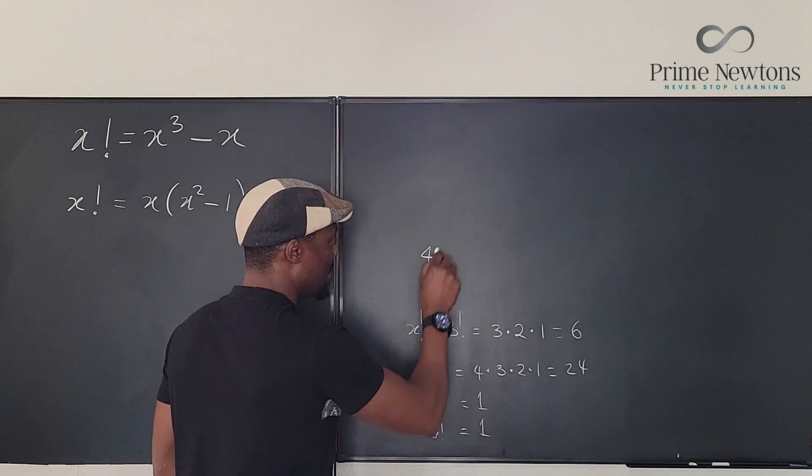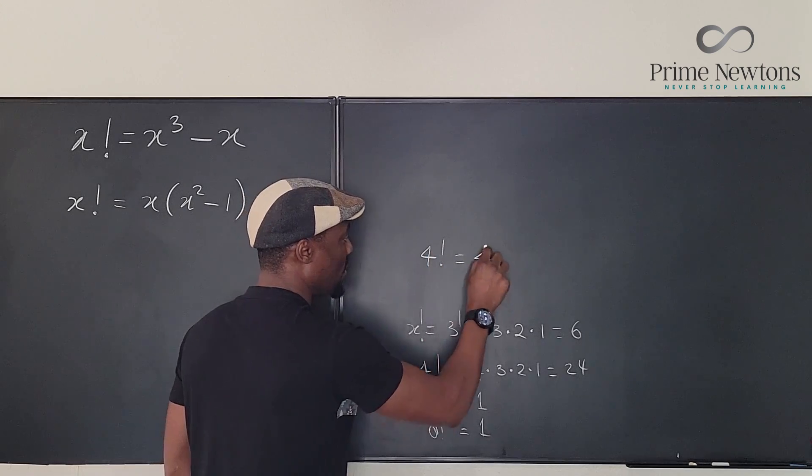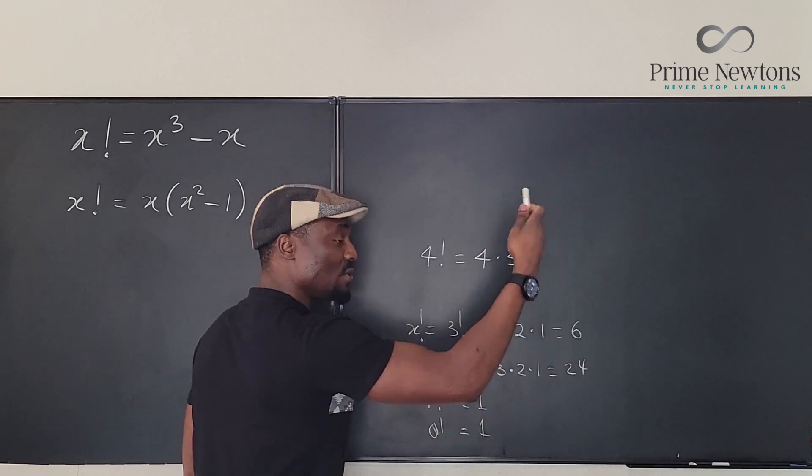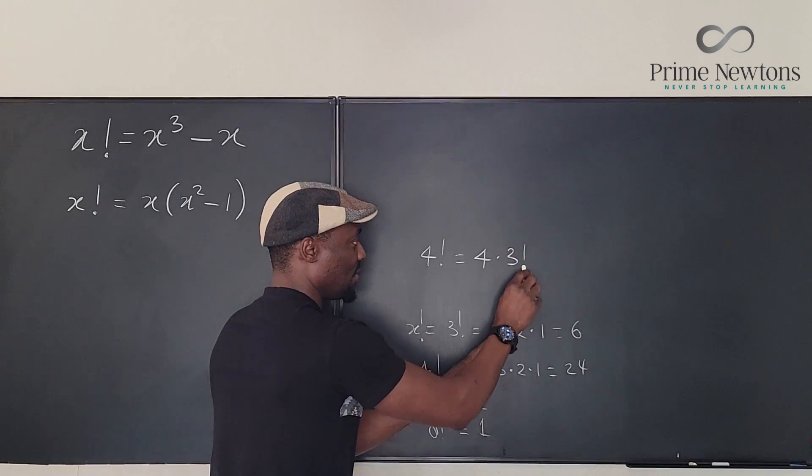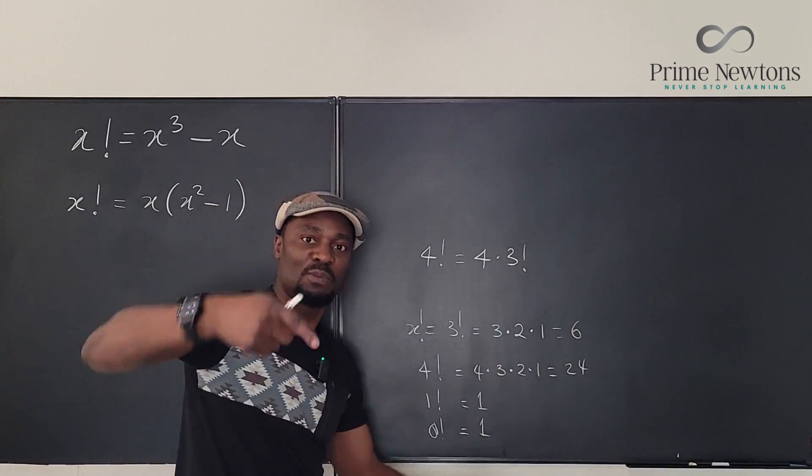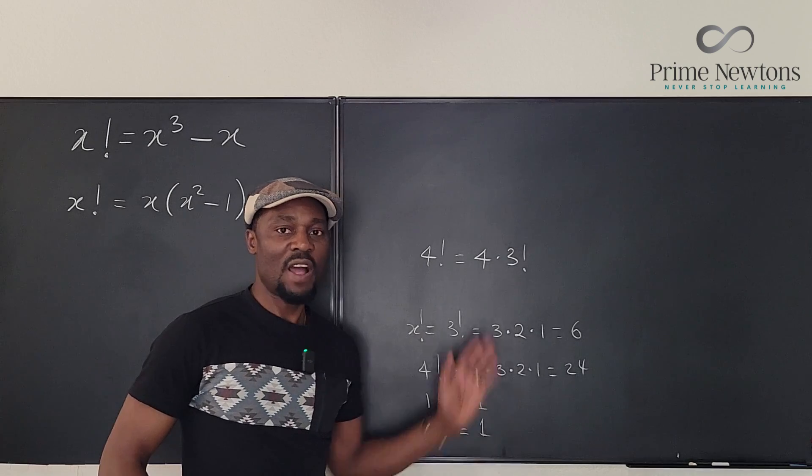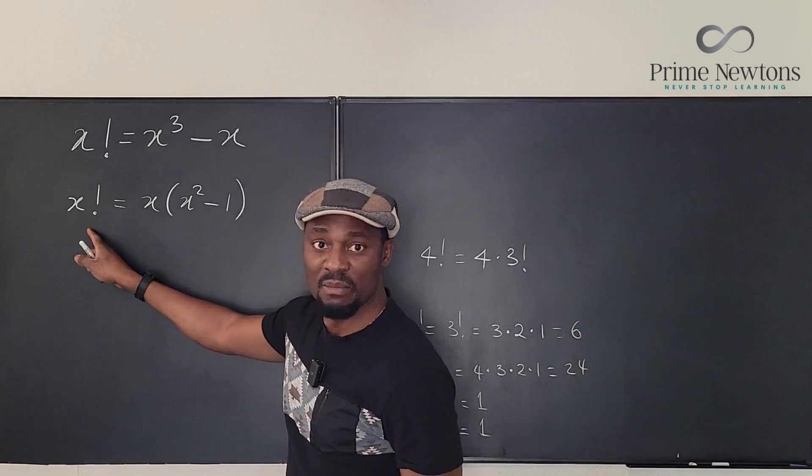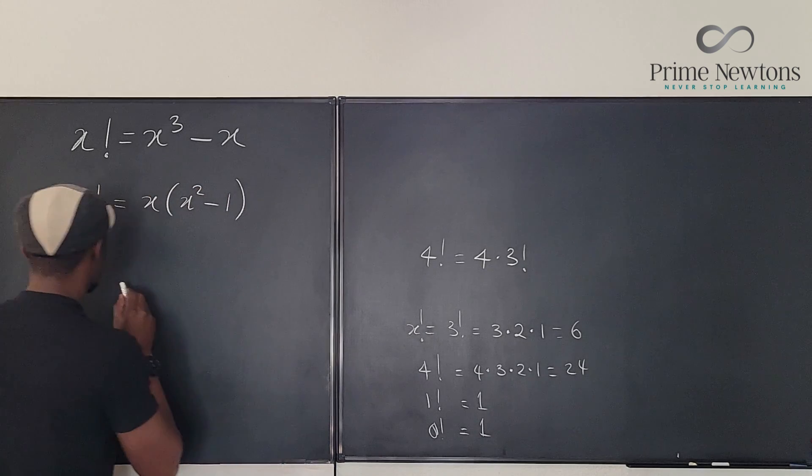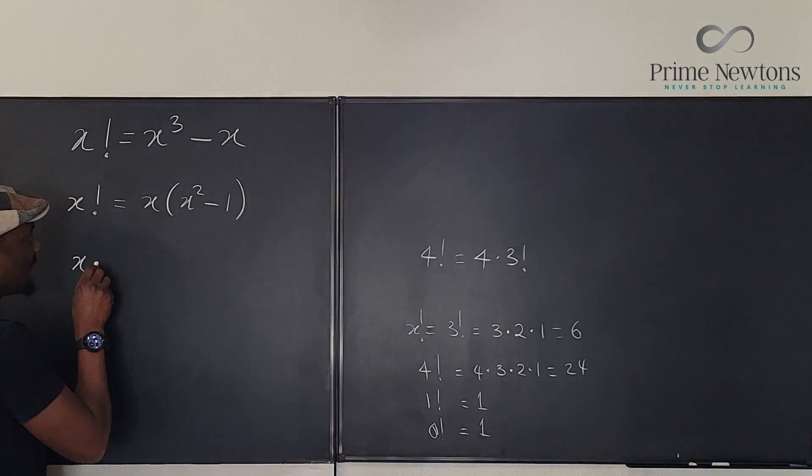So you see that I could have stopped here and said that I could have written this as, see, 4 factorial is the same thing as 4 times 3 times 2 times 1, but 3 times 2 times 1 is what we call 3 factorial. So you can always stop on the next one and just put a factorial sign. You don't have to write everything all the way to the end. And that's what I'm going to employ here. So I can write this as x times x minus 1 factorial.